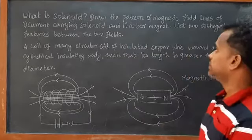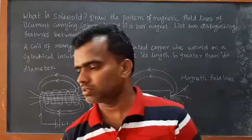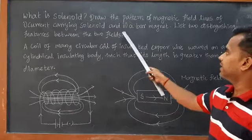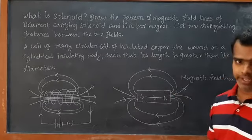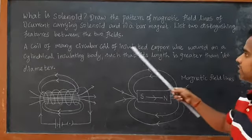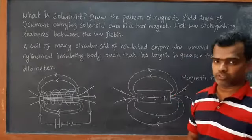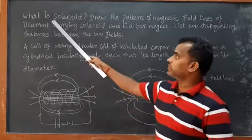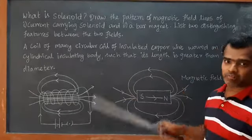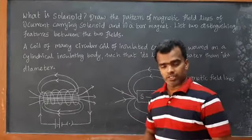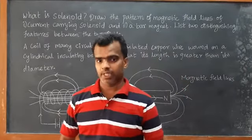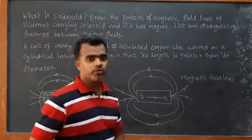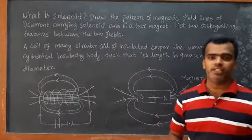The question asks: What is a solenoid? Draw the pattern of magnetic field lines for a current carrying solenoid and a bar magnet. List two distinguishing features between the two fields. The question is slightly twisted because while we know the solenoid behaves like a bar magnet, they are asking for differences between the two.